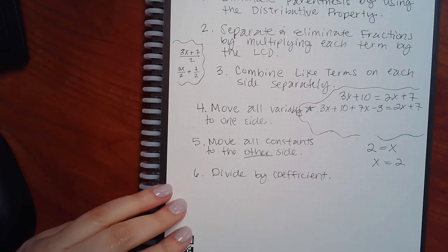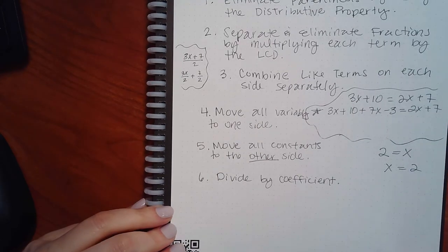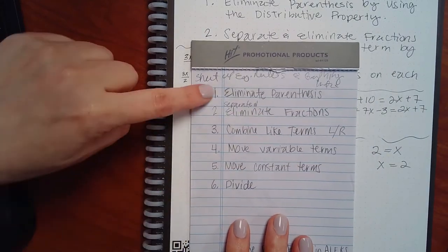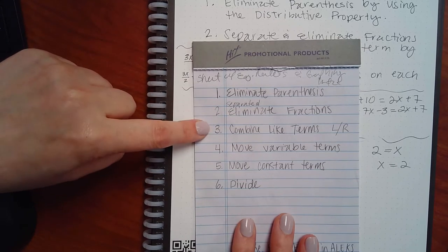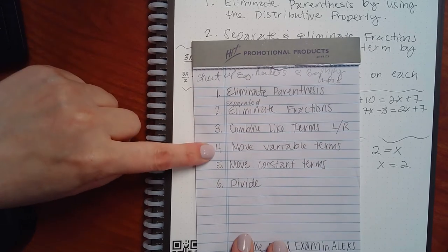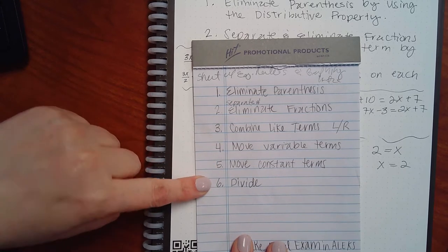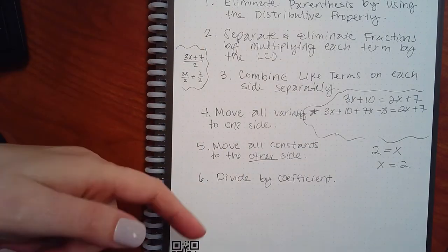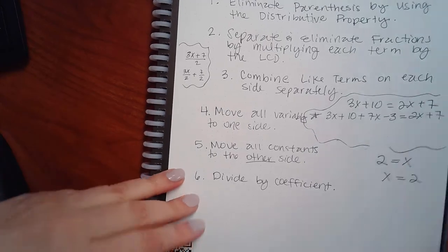Let me write the problem down on the next page for my examples. My shortcut checklist is: eliminate parentheses, separate and eliminate fractions, combine like terms left and right, move variable terms, move constant terms, then divide. This is just a shorthand version of all six steps, and I'll use this to go through them when I get to examples.